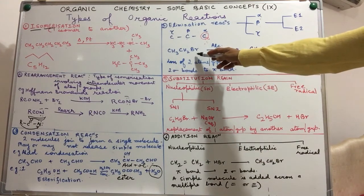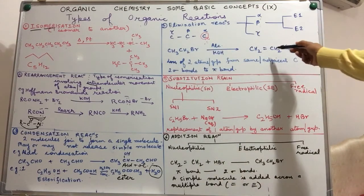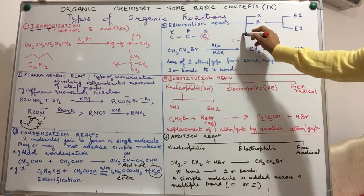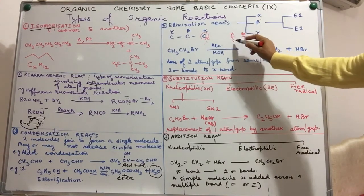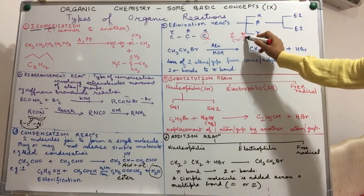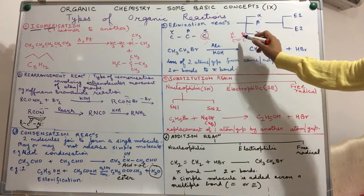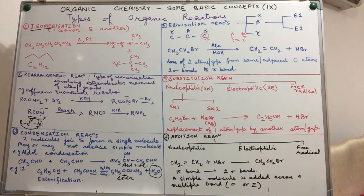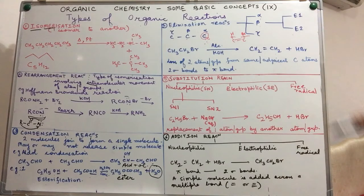I have taken a very simple example over here like bromoethene. It loses its H and Br to give us an ethene. So if you notice over here, Br and hydrogen. Hydrogen from here, Br from here gives us a double bond. Two single bonds, that means two sigma bonds get converted into a pi bond. Secondly, hydrogen and bromine belong to adjacent carbon atom. In other words, this is an example of beta elimination.